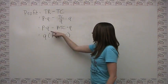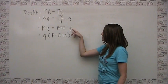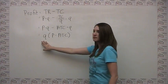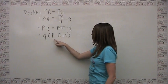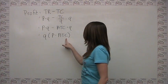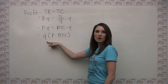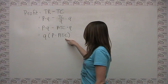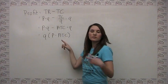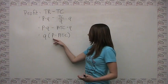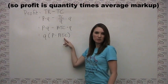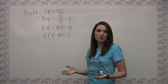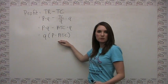Now that we have profit in this form, we can factor out Q and say that profit equals quantity times (price minus average total cost). We can think of profit as how much output we're producing, and price minus average total cost as our average markup over cost — just by how much our price exceeds our average cost of production. This gives us something with a natural graphical interpretation.